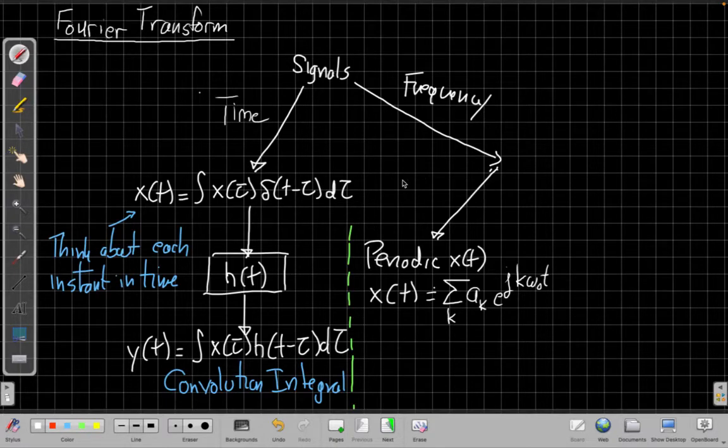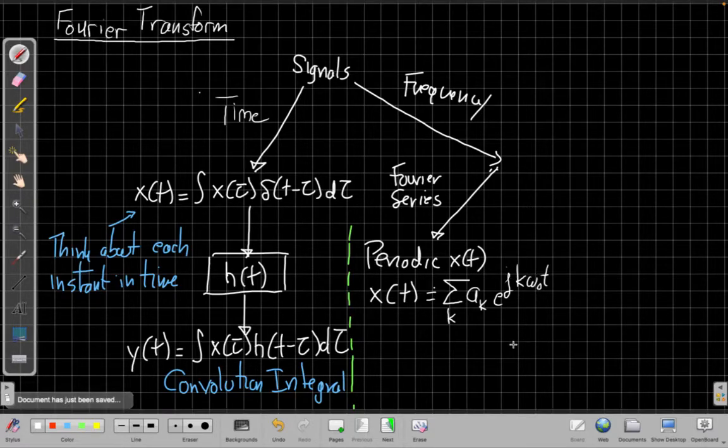And this view is the Fourier series view of the world. We saw we could go through filtering this. The eigenfunction property for LTI systems says if I put this through an LTI system, each exponential comes out as the same exponential scaled by the frequency response of the system evaluated at that frequency, kω₀.